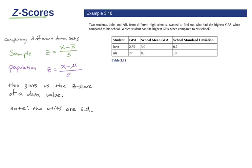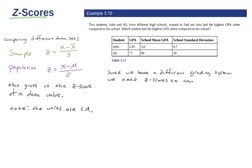Say we have some students, John and Ali, and they're on different grading scales. The GPA for one is on a 4.0 scale, and the other is slightly different. We want to see how they did relative to their school — who actually performed better. Since they're on different scales, we need a common measuring stick. We'll calculate the z-scores in order to compare them. We are talking populations here, since it's the entire school.